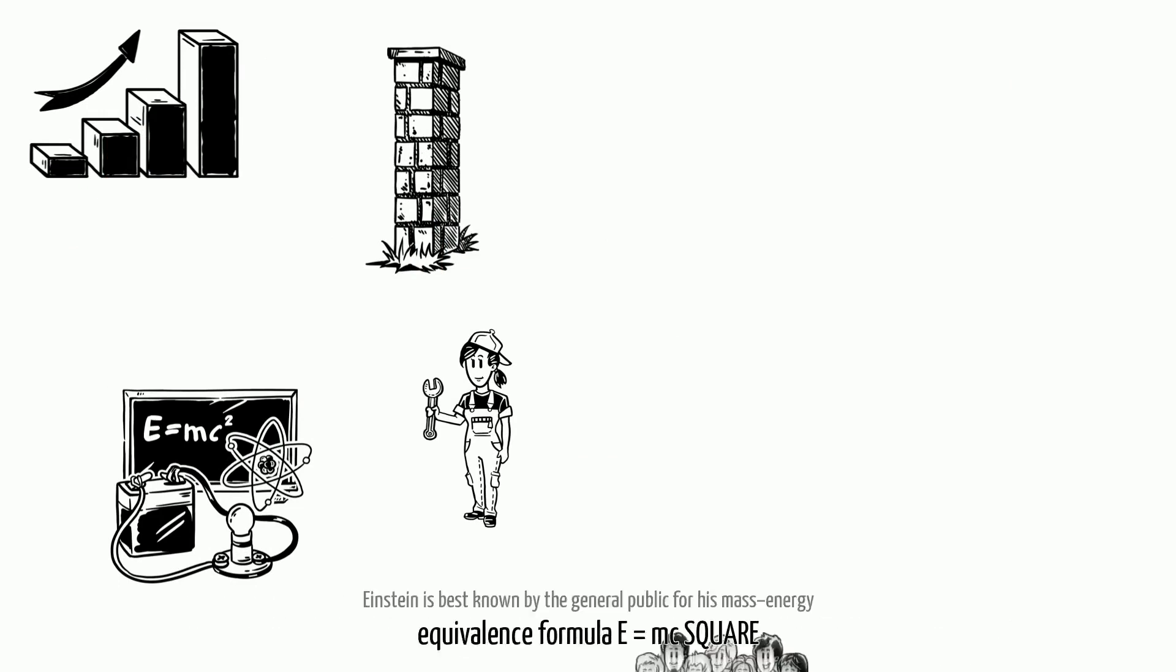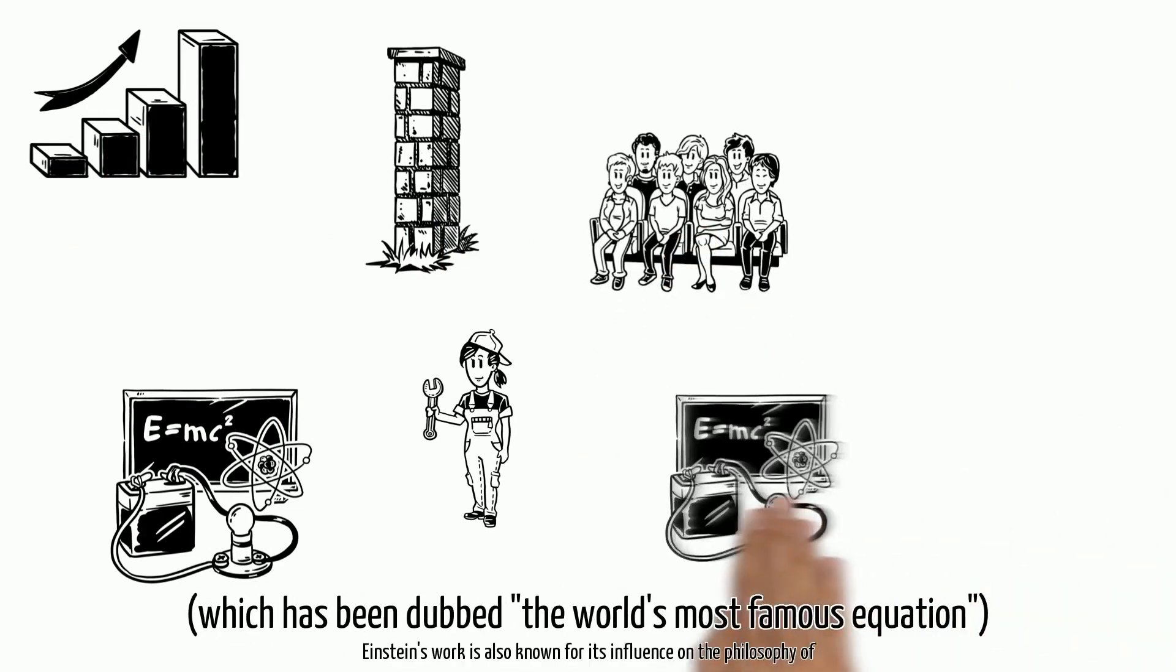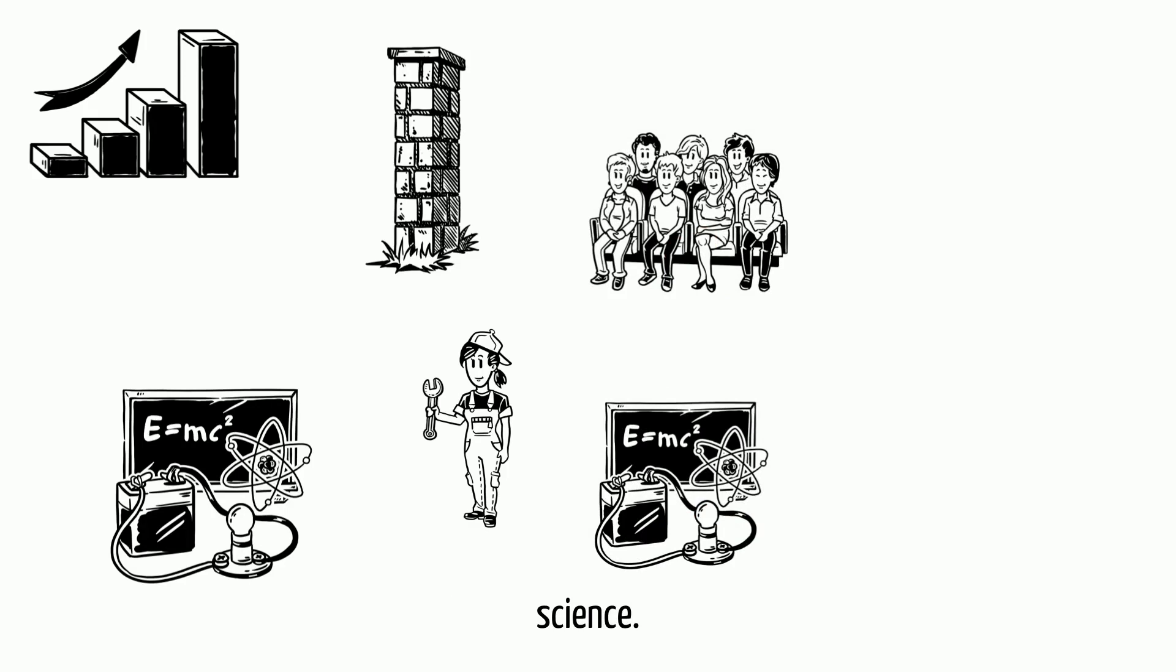Einstein is best known by the general public for his mass-energy equivalence formula E=mc², which has been dubbed the world's most famous equation. Einstein's work is also known for its influence on the philosophy of science.